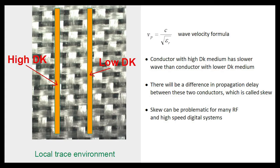There's another way to think about the glass weave effect: wave velocity, also called phase velocity or propagation delay. When the medium has a higher dielectric constant, it slows the wave down. The conductor over glass has slower wave propagation than the conductor over open areas. When parallel conductors have timing requirements—where signals should arrive at the circuit end simultaneously—this becomes a problem, as the signals will not arrive at the same time. This issue is called skew, which can affect RF applications but is usually more problematic in high-speed digital applications.